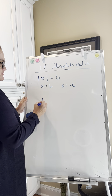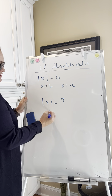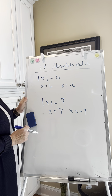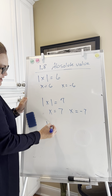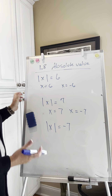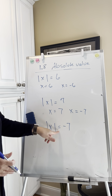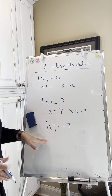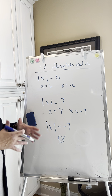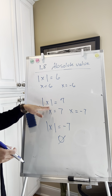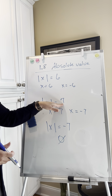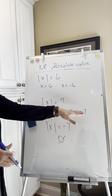If I said the absolute value of x equals 7, you'd say x could be 7 or x could be negative 7 — two solutions. Now what if I said the absolute value of x equals negative 7? We can't have the absolute value of a number equal a negative, so that's going to be no solution — a special case. We have to have the absolute value equal a positive number, and then there are two possibilities: the positive or the negative case.